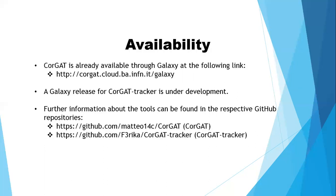Regarding the availability of the tools, Corgat is already available on Galaxy, whereas the Galaxy release for CorgatTracker is under development. Furthermore, additional information about the individual tools, their code, and their functioning in detail can be found in the corresponding GitHub repository. All the useful links for the availability of the tools presented are reported in this slide.